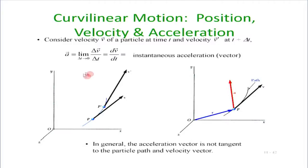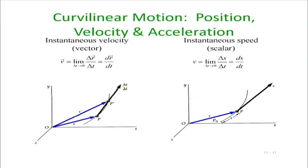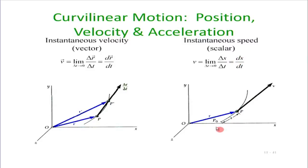Welcome back. We discussed briefly how to define velocity for a curvilinear motion. The change in position delta r is a vector, and divided by delta t gives the instantaneous velocity vector. The corresponding instantaneous speed is given by ds by dt, which is the change in magnitude — the change in length divided by time.